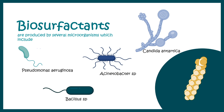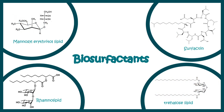Biosurfactants can be derived from different sources. Several fungi and bacteria such as Candida antarctica, Acinetobacter, Bacillus, and Pseudomonas aeruginosa are good sources of biosurfactants. Popular biosurfactants with industrial use include rhamnolipid, trehalose lipid, surfactin, and mannosyl erythritol lipid — all commonly used in day-to-day industry.